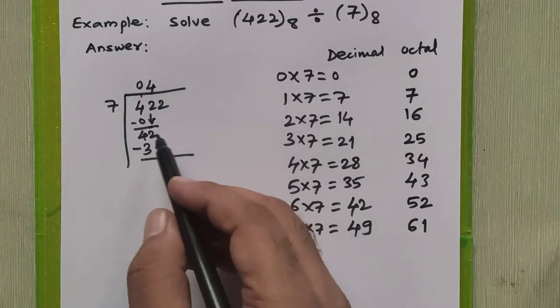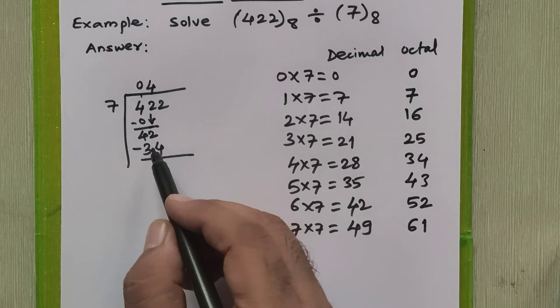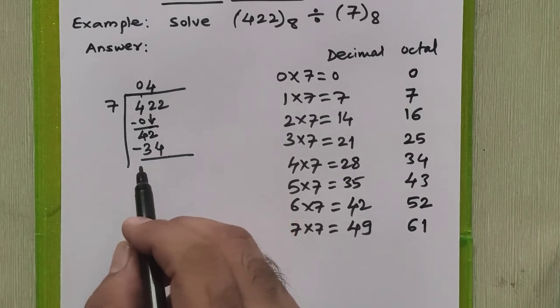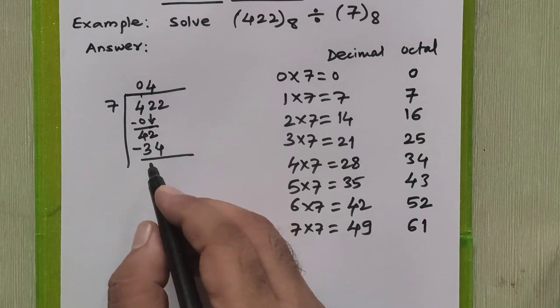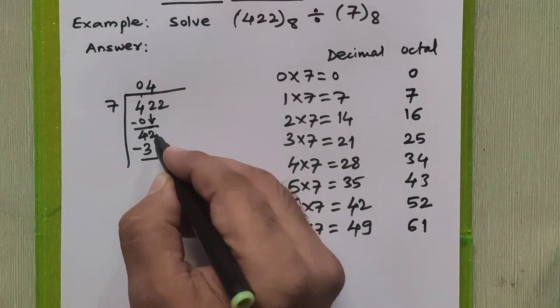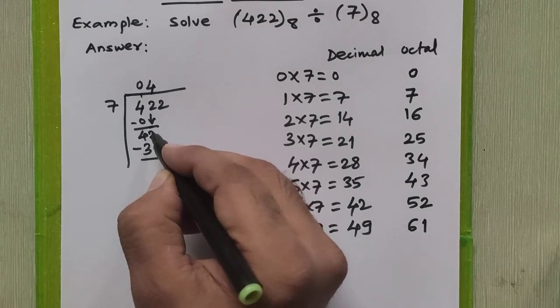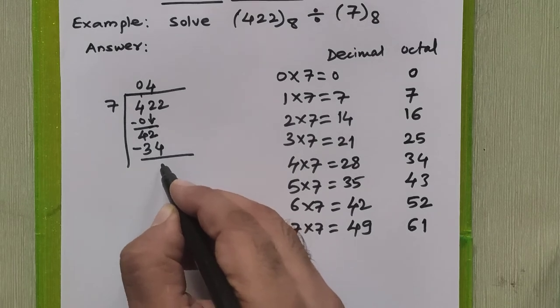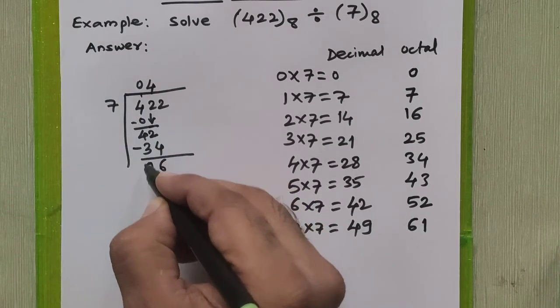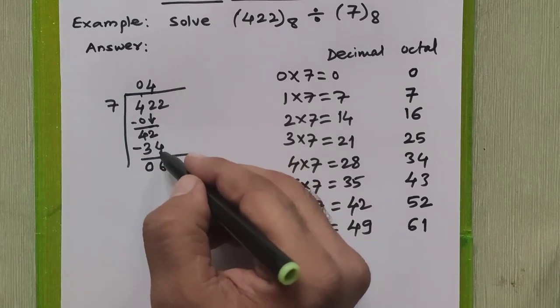So we will perform octal subtraction the way we studied in our previous lectures. When you take a borrow, 42 minus 4 is not possible. We will take a borrow from here. 1 borrow is equal to 8. 8 plus 2 is 10. 10 minus 4 is 6. And here it is 0 because we have given 1 borrow. 3 remain, 3 minus 3 is 0. So the subtraction result is 06. Now we will bring down this 2, so this becomes 62.